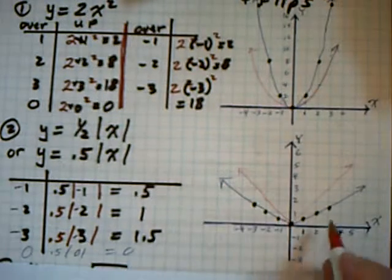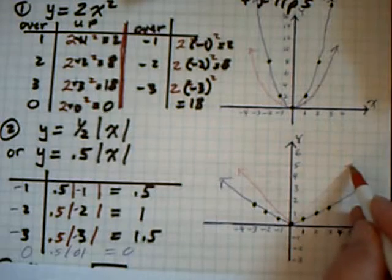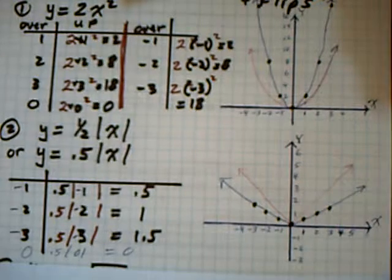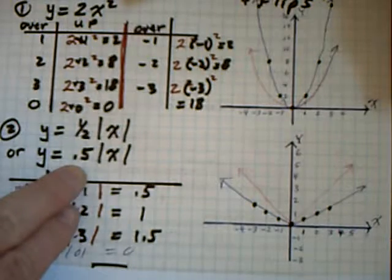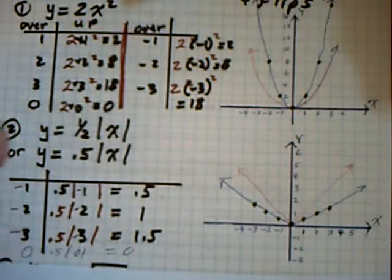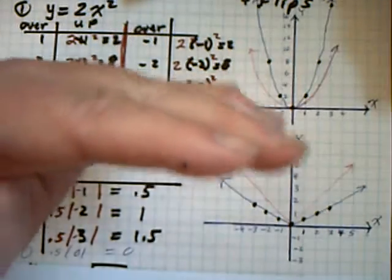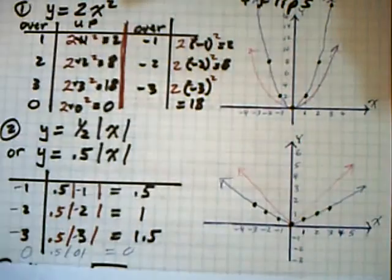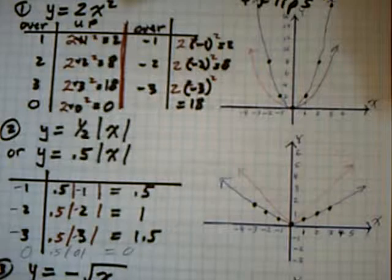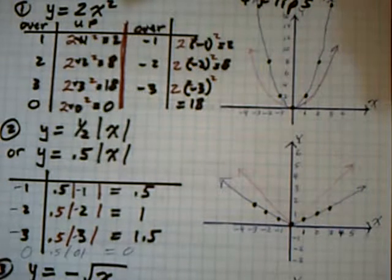You're going up half as much each time, so this time it shrinks in the y-direction. If a number in front is a fraction, it's going to shrink the graph in the y-direction — the up and down direction. Now, what happens if you throw in a negative sign?